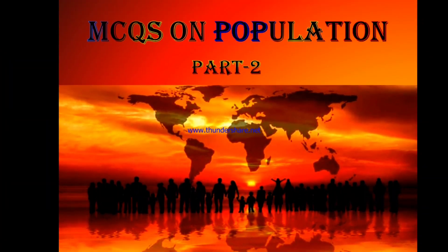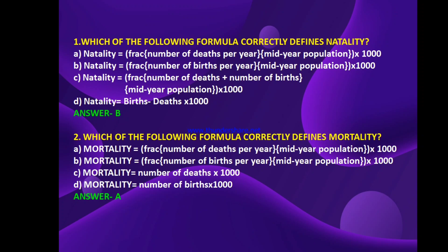Without wasting any time, let's start our MCQs. The first question is: which of the following formula correctly defines natality? Option A: natality equals the fraction of number of deaths per year into mid-year population into thousand. Option B: natality equals fraction of number of births per year into mid-year population into thousand. Option C: fraction of number of deaths plus number of births into mid-year population into thousand. Option D: natality equals births minus deaths into thousand. The answer is B — natality equals fraction of number of births per year into mid-year population into thousand.